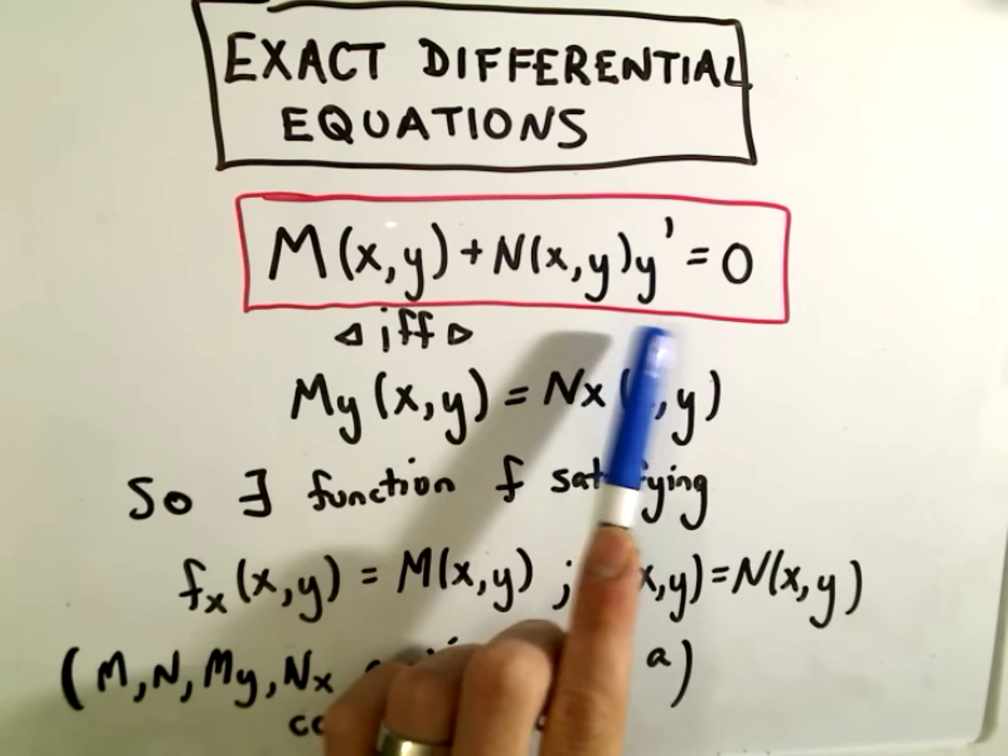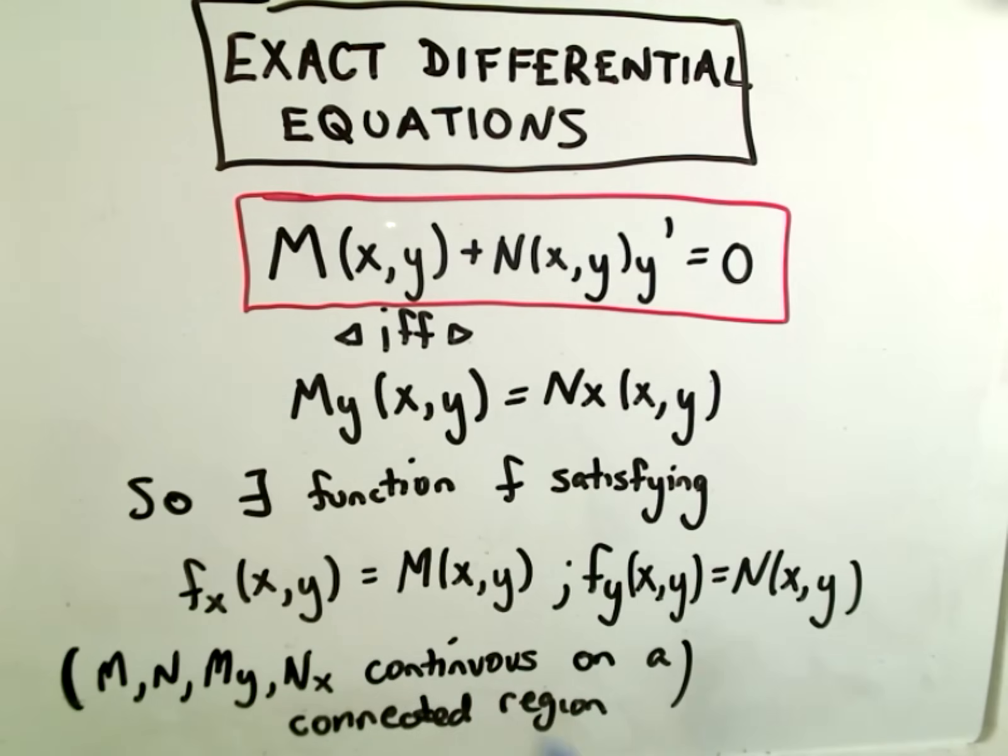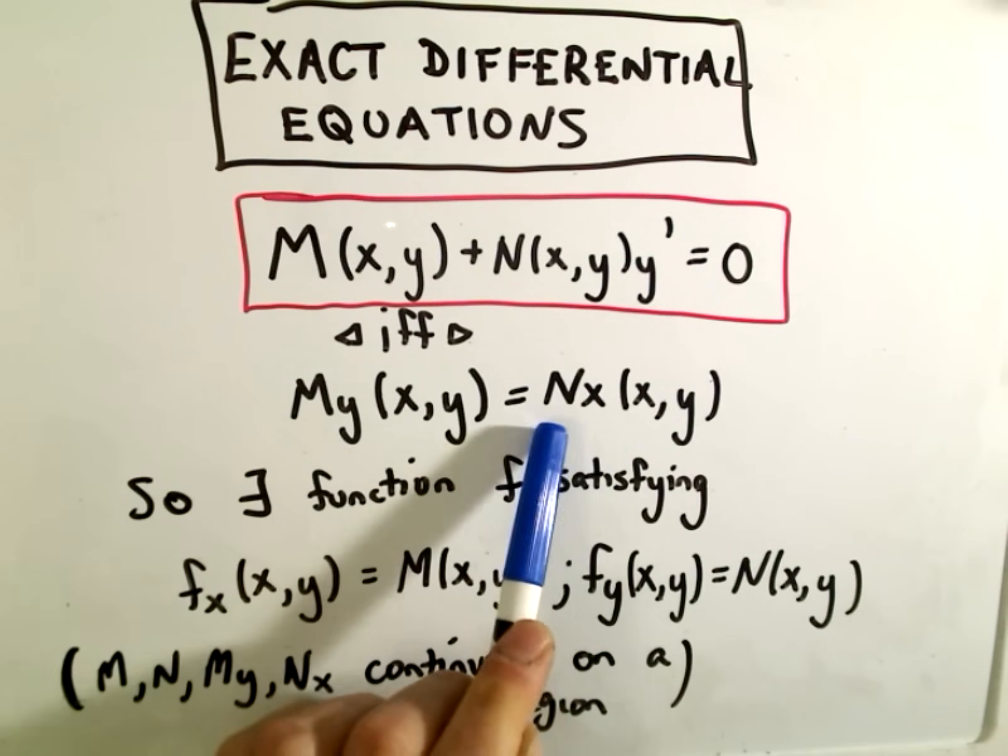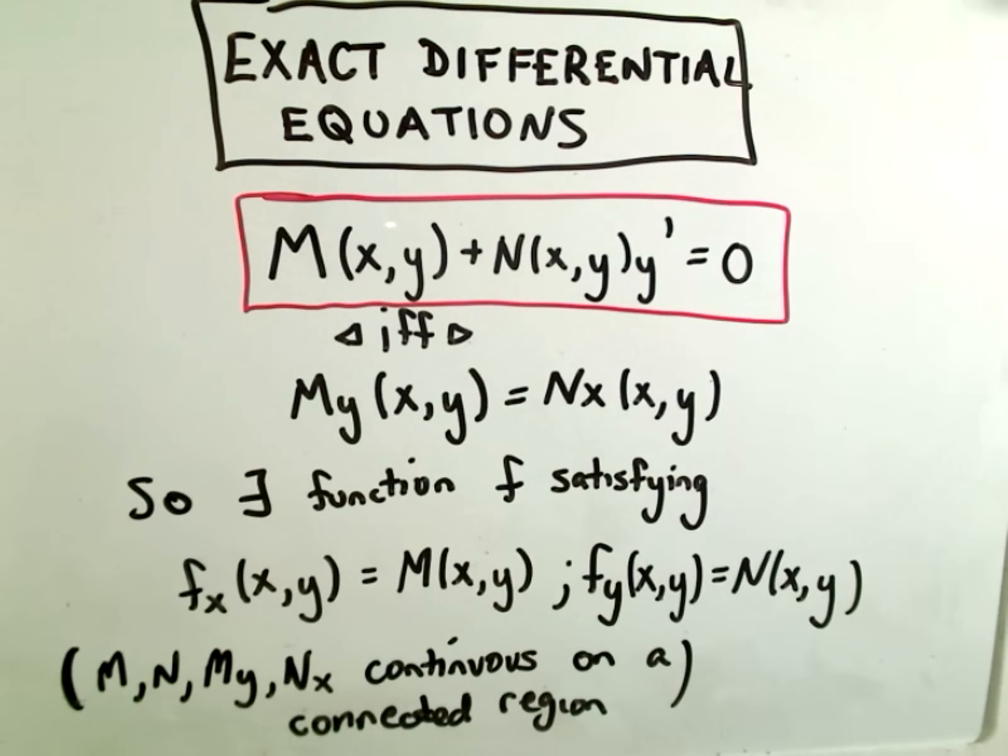another function of x,y times y prime set equal to 0. And basically it says if you take the derivative of M with respect to y and the derivative of N with respect to x, and those are equal, we call the equation exact.